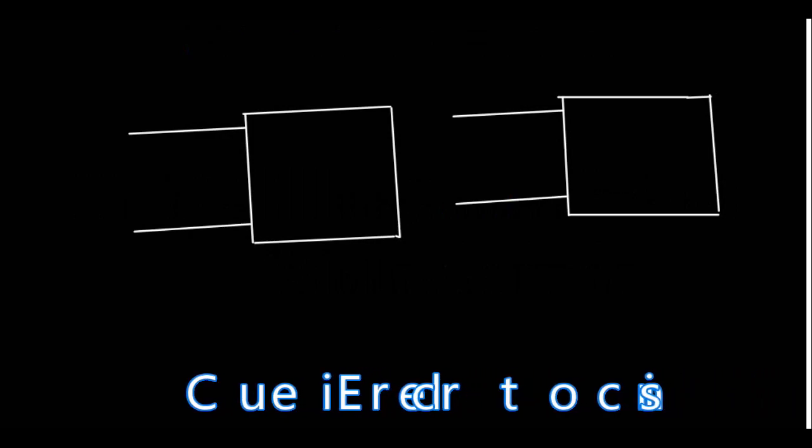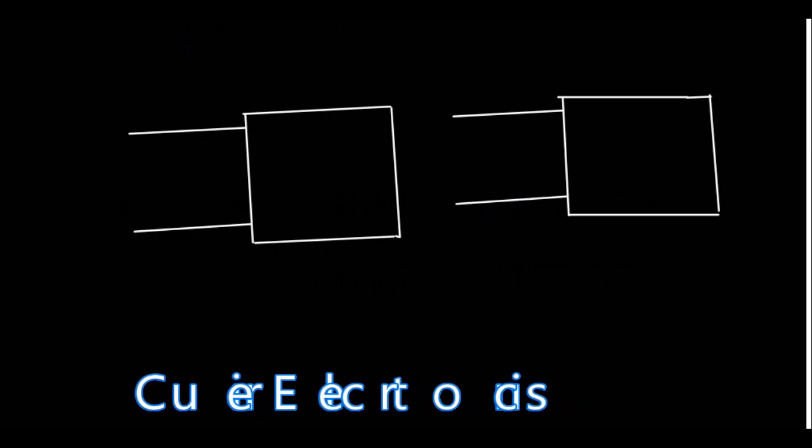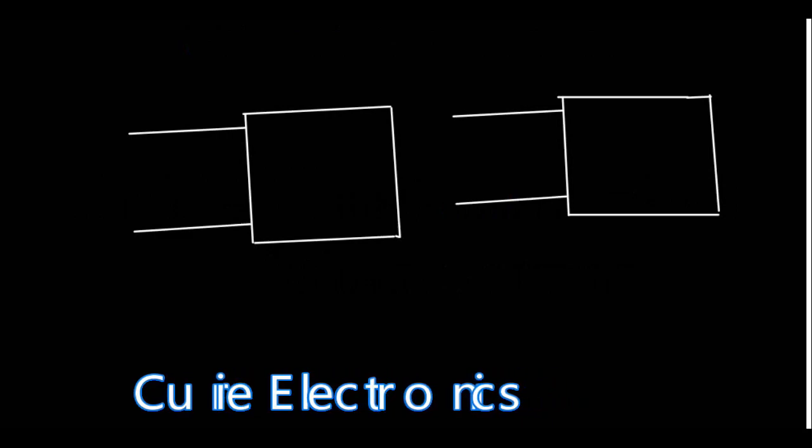You might have seen digital ICs like different gate ICs, TTL and CMOS, that is 7400 or 7447 counter, various digital ICs and microcontrollers.